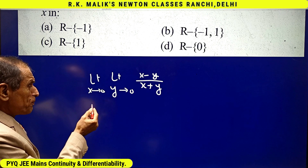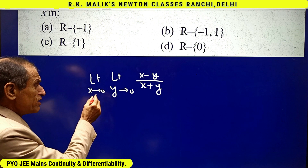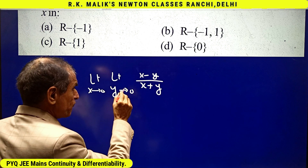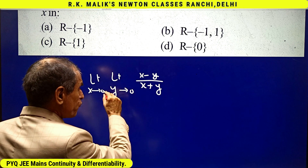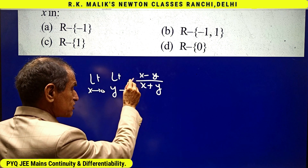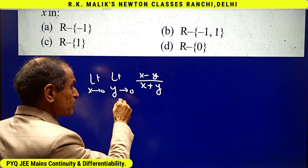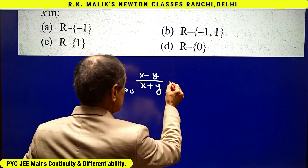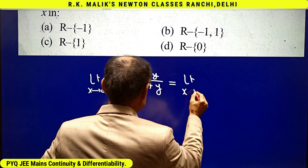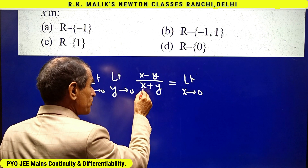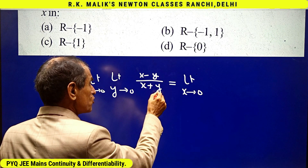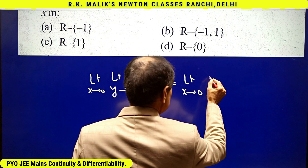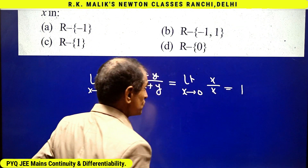The two limits operate such that x takes a value very near to 0 and stops there. We put that value and then y goes on coming nearer and nearer to 0. As x is fixed near 0 and y→0, the numerator tends to x and the denominator also tends to x, giving x upon x, and the answer is 1.